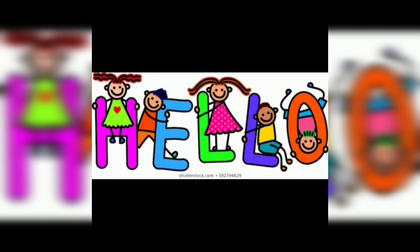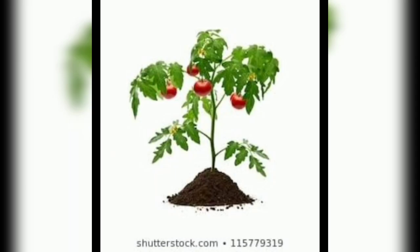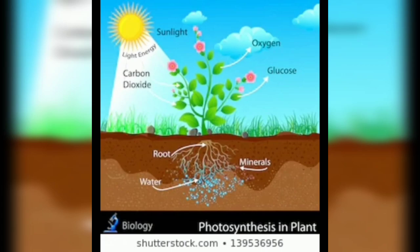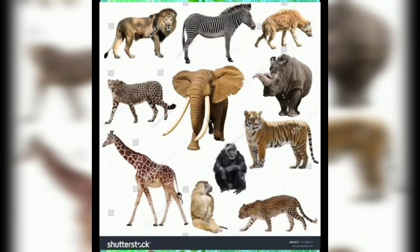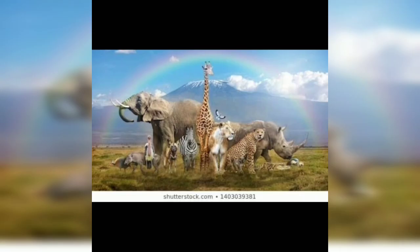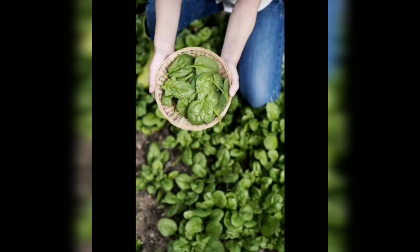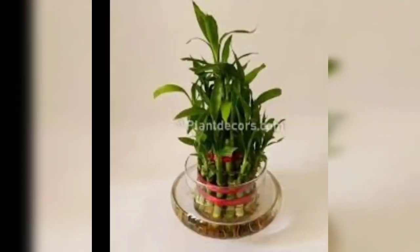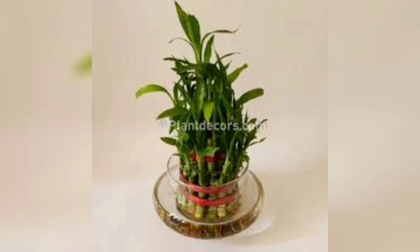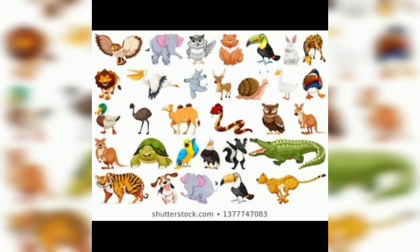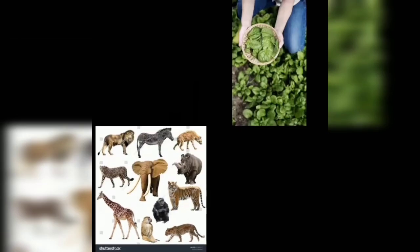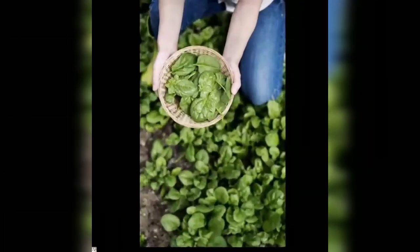Hello students. Plants can prepare their own food by the process of photosynthesis, but animals cannot. Animals get their food from plants either directly by eating plants or indirectly by eating animals that eat plants. Some animals eat both plants and animals.